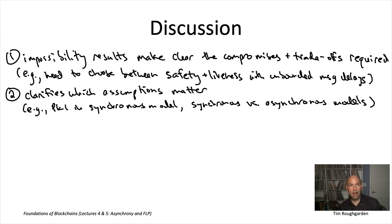Here, in lectures four and five, what we've learned is that network reliability really matters for consensus. There's things you can accomplish when you have guaranteed message delivery, bounds on the maximum message delay that you fundamentally cannot achieve if you don't make that assumption, if you have unbounded message delays.